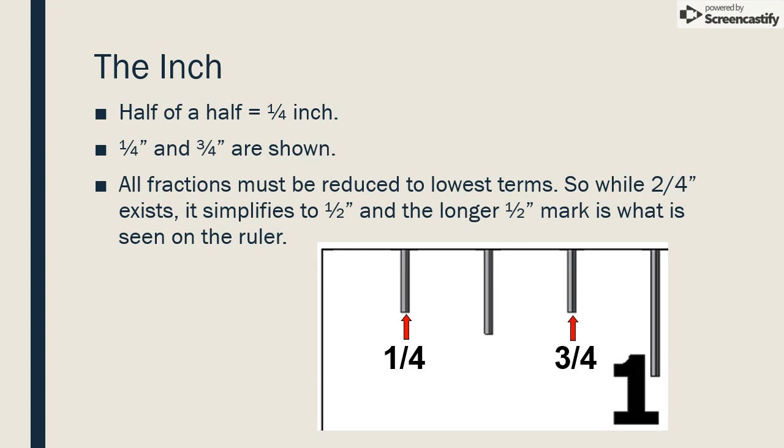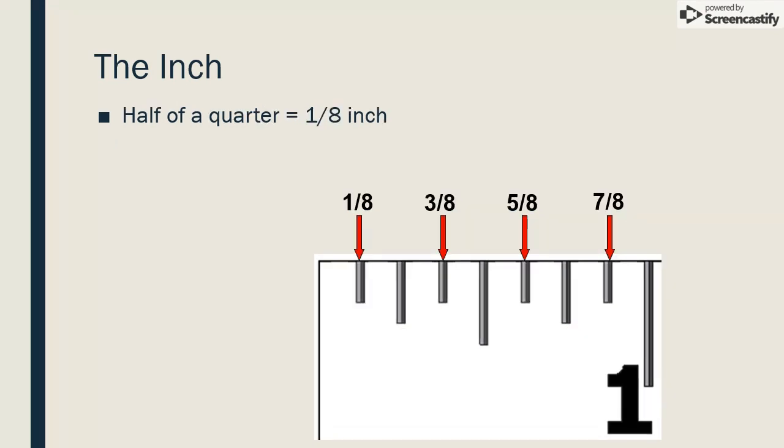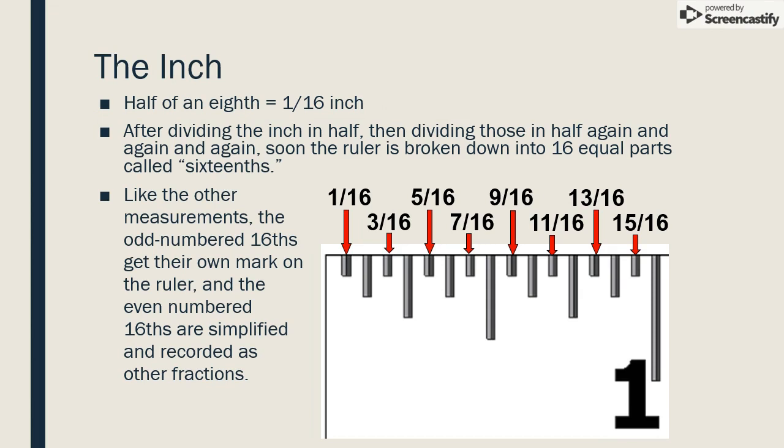Half of a half equals one-fourth of an inch. One-fourth and three-fourths are shown. All fractions must be reduced to lowest terms, so while two-fourths does exist, it simplifies to one-half, and the longer one-half inch mark is what is seen on the ruler. Half of one-quarter inch equals one-eighth of an inch, and half of one-eighth of an inch equals one-sixteenth.